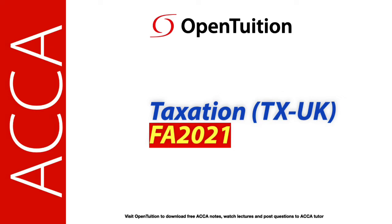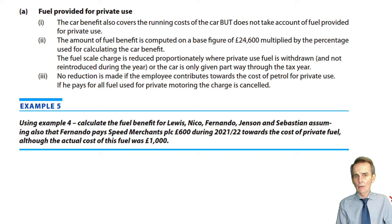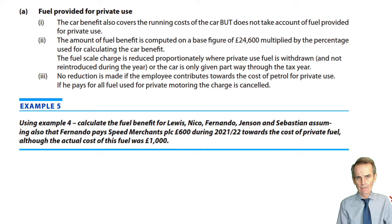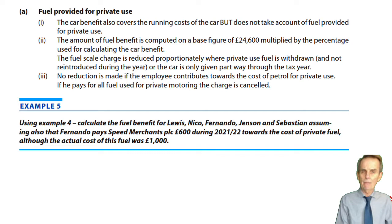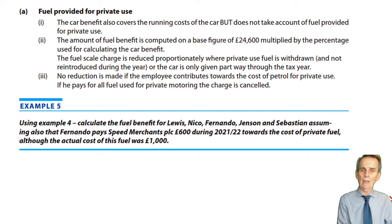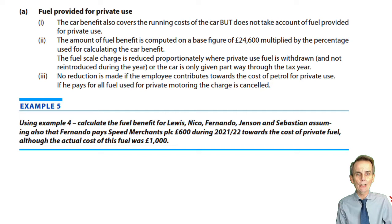In our previous lecture, we saw how to determine the assessable benefit in relation to the provision of a motor car by an employer to an employee — a car with both business and private use. The benefit computation demanded that we pick up the list price from the question, work out an annual benefit, and establish what percentage to apply to that list price.